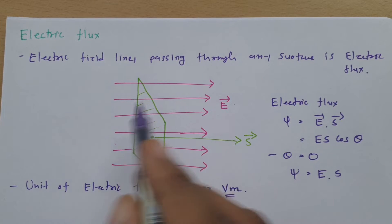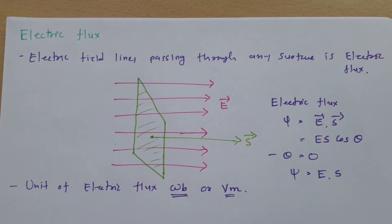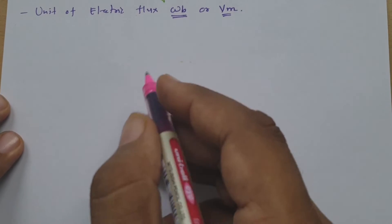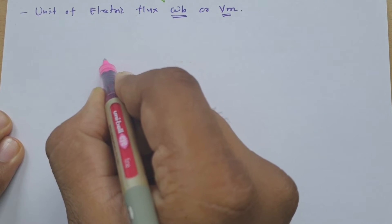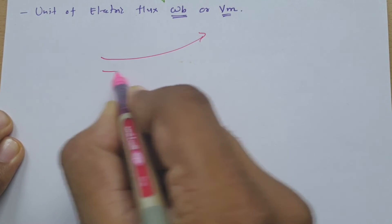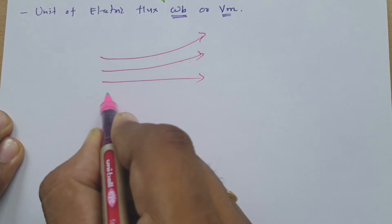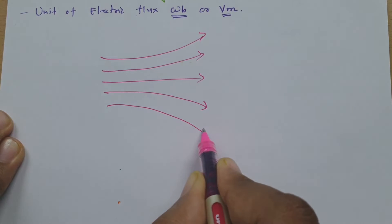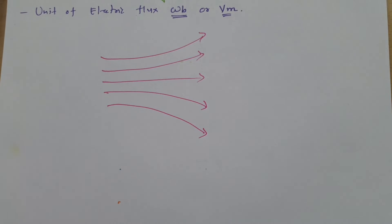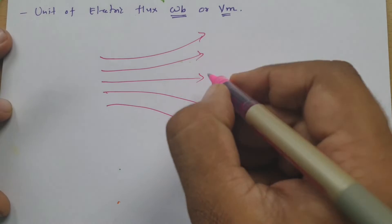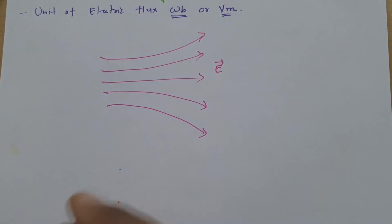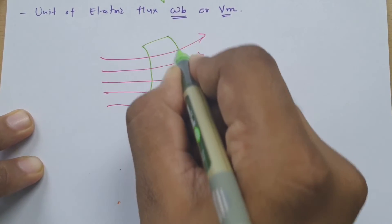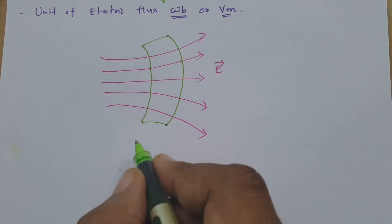Now, what if you have a non-uniform electric field and a surface which is not flat? Let us take one case and then I will explain how to calculate electric flux for that. Here I will draw a diagram of a non-uniform electric field, and for this electric field we have a surface that is not flat.